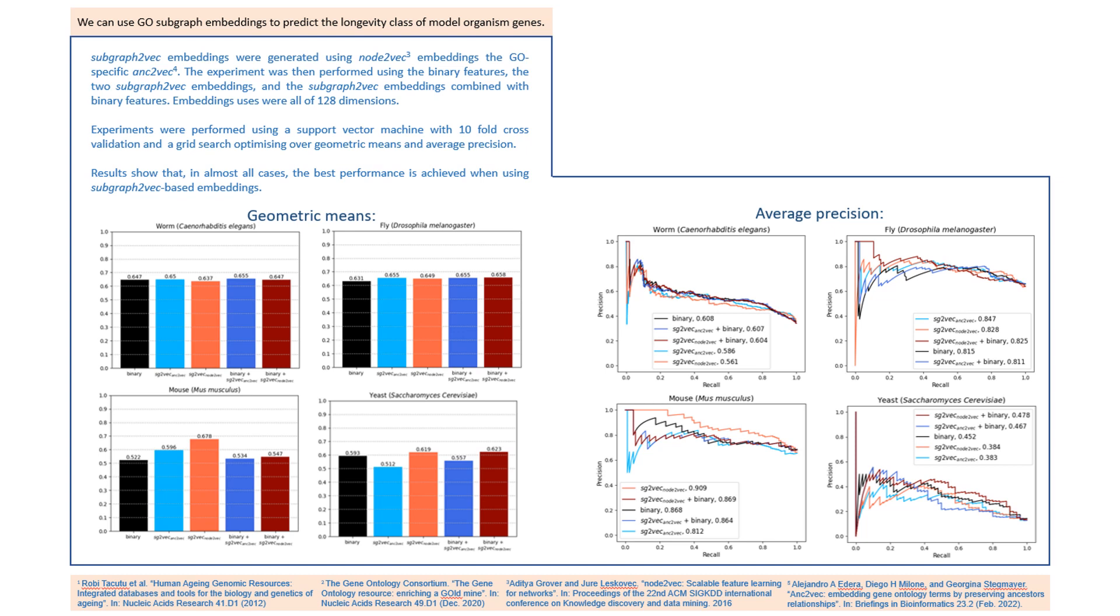The node embedding methods used were node-to-vec, which is a very popular and successful method, and the GO-specific ont-to-vec. The embeddings were all of 128 dimensions, and for the prediction task we used a support vector machine to perform 10-fold cross-validation and a grid search over hyperparameters. This grid search and evaluation was performed for geometric means and average precision.